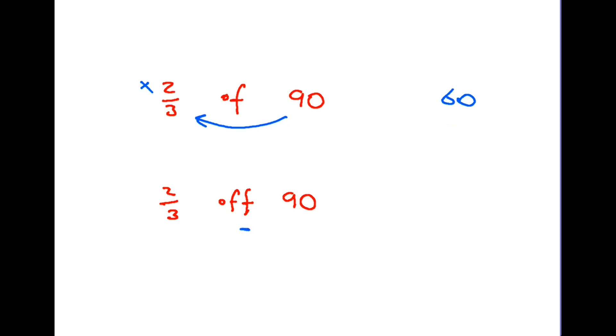But of course, this extra little F here means two-thirds off 90. Therefore, once you've found your two-thirds at the top here, the second one is asking you to take it away. So one little letter, completely different solution. One to be careful of.